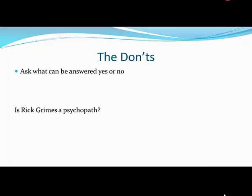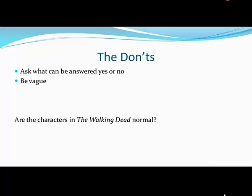Remember, you also have to think of that refutation that's going to be part of the four pillars. You also don't want to be vague — there has to be that clear roadmap. For example, 'are the characters in The Walking Dead normal?' Well, 'normal' is a really vague term, not easy to define, and there are a lot of characters in the show. This is a vague question because I haven't gotten it down to that laser focus yet.